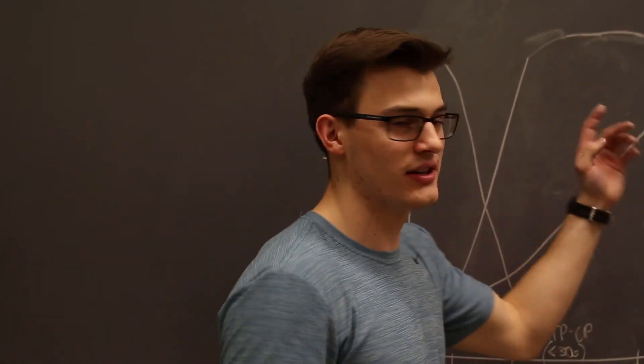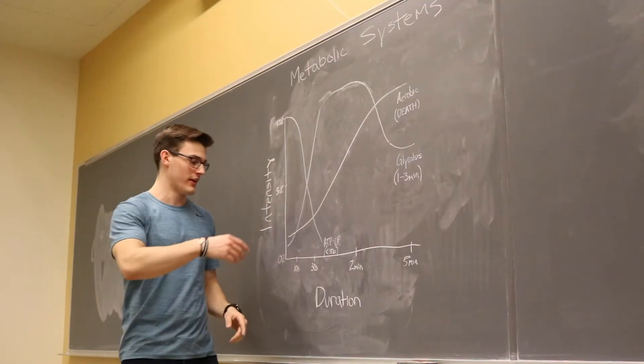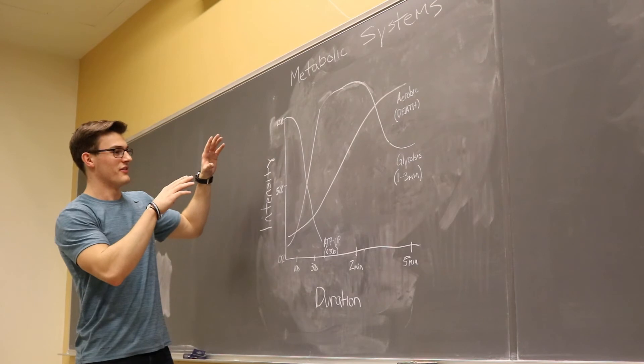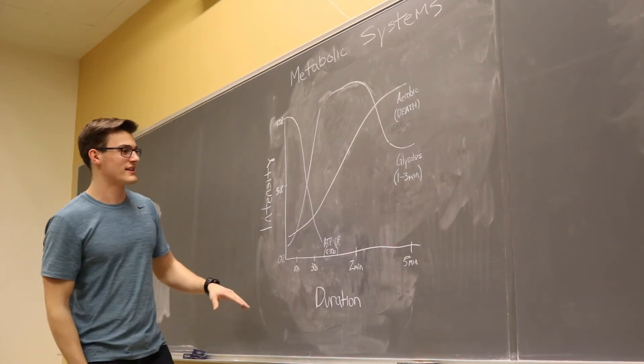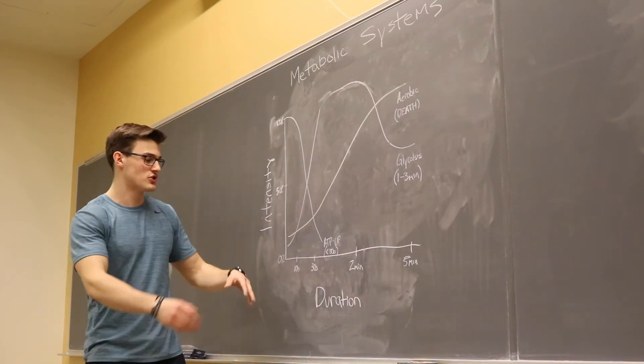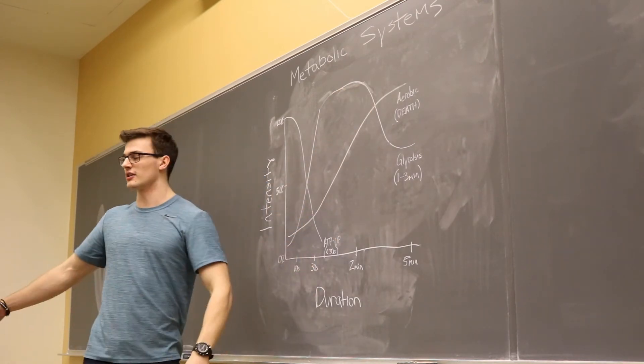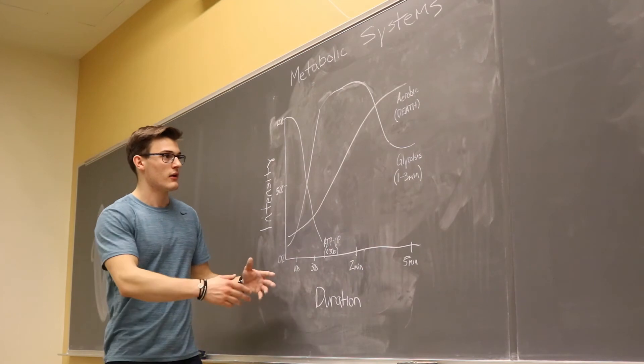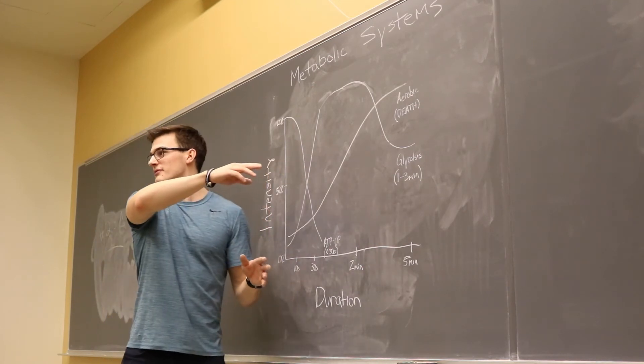Alright, so this is a very typical graph. Like I said, why can't you use aerobic all the time? If you can do it for over five minutes, why don't you just do it all the time, even for the 30 second duration? Well these guys are skinny, right? They can't make enough ATP in their mitochondria.